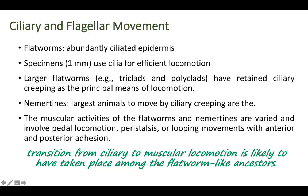Flatworms have both cilia and muscles, showing that smaller organisms rely on cilia while larger platforms use muscles as well. This transition from ciliary to muscular locomotion shows that flatworms may be unique ancestors in which this transition occurred. It shows that the transition from ciliary to muscular locomotion might have taken place among some flatworm-like ancestors. These are the non-muscular movements.